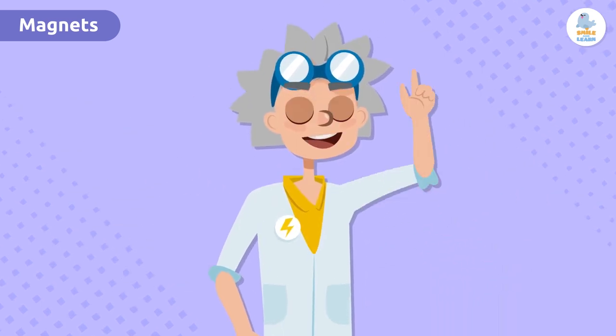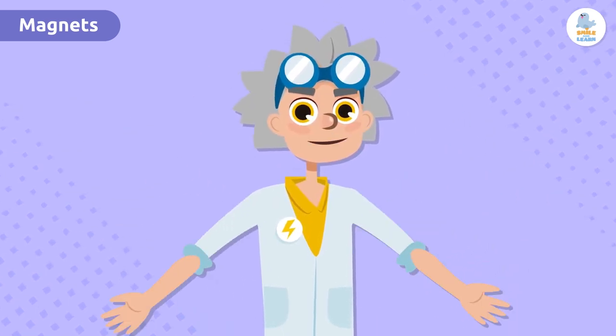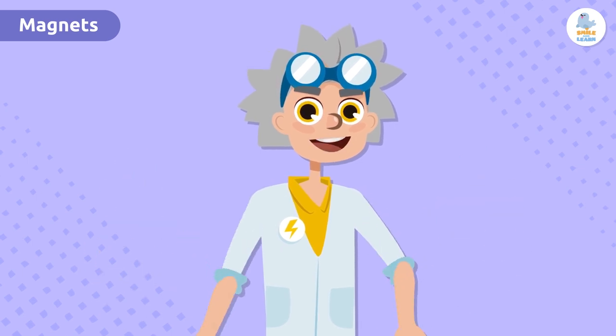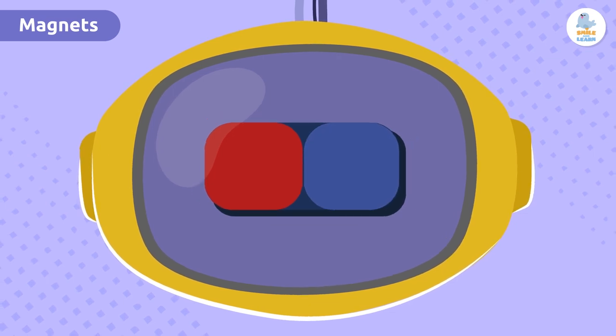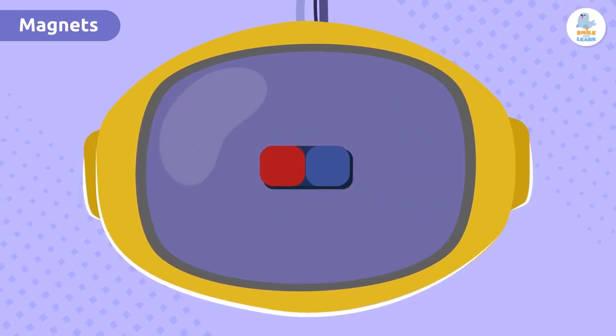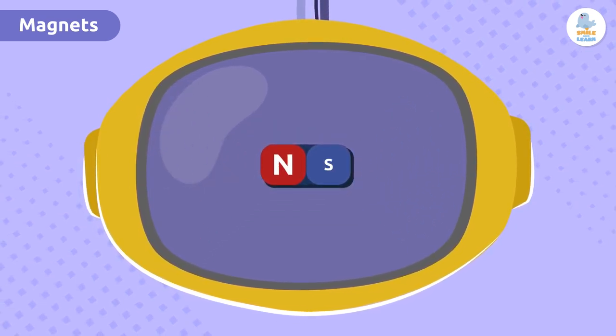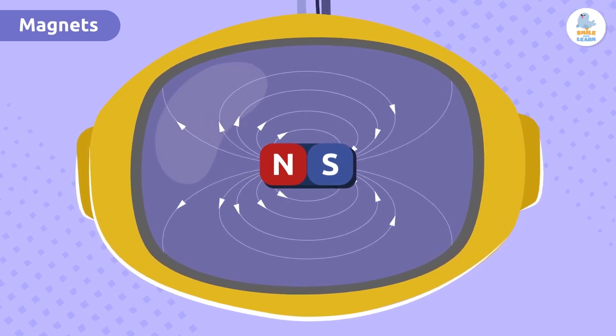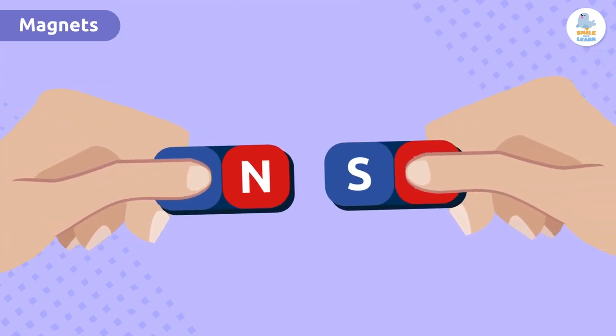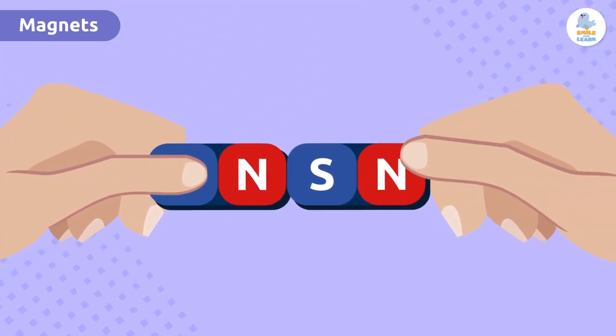So what are the characteristics of magnets? Come with me to discover them. Magnets have two poles, which we can find at their opposing ends. We call these ends the north pole and the south pole, and they generate a magnetic field.